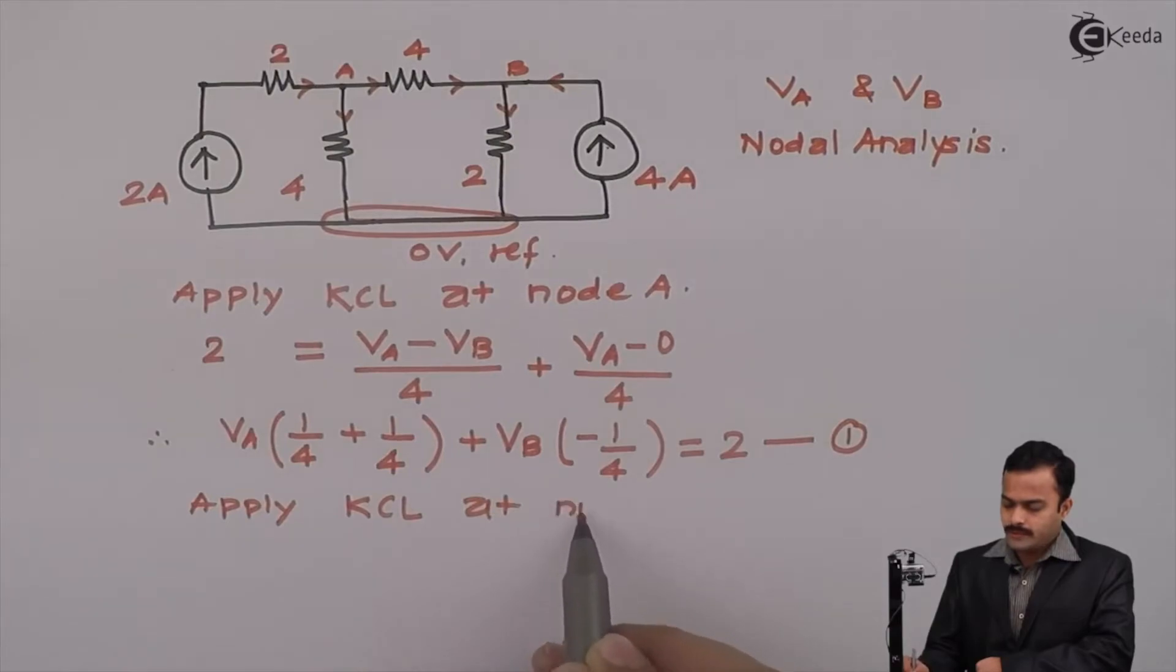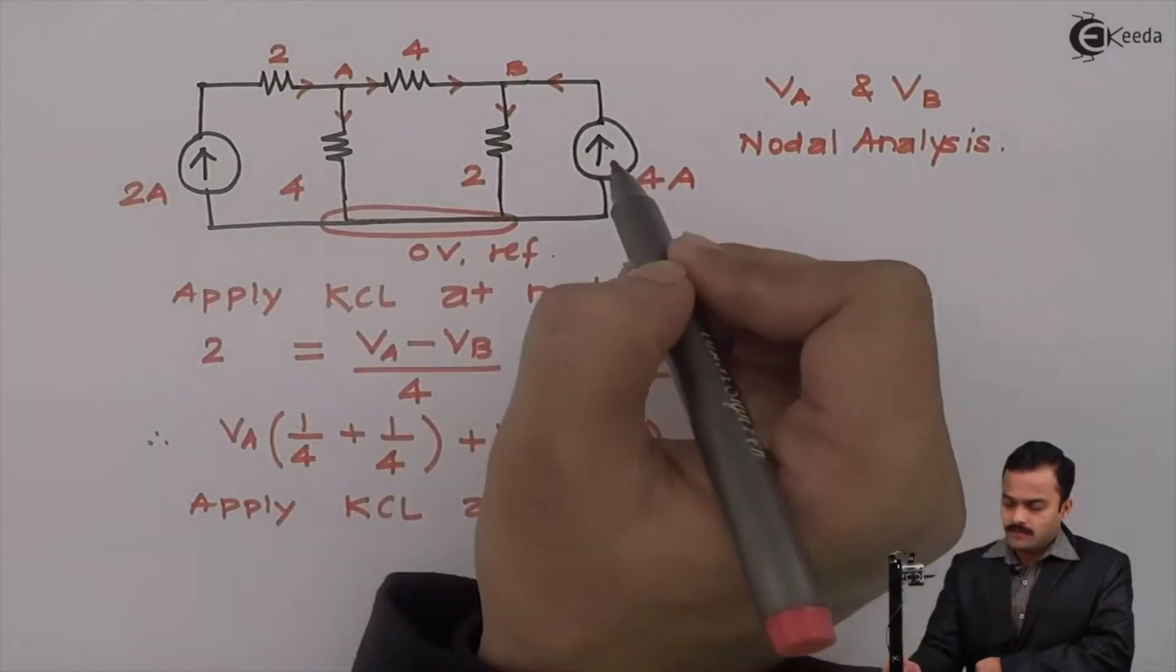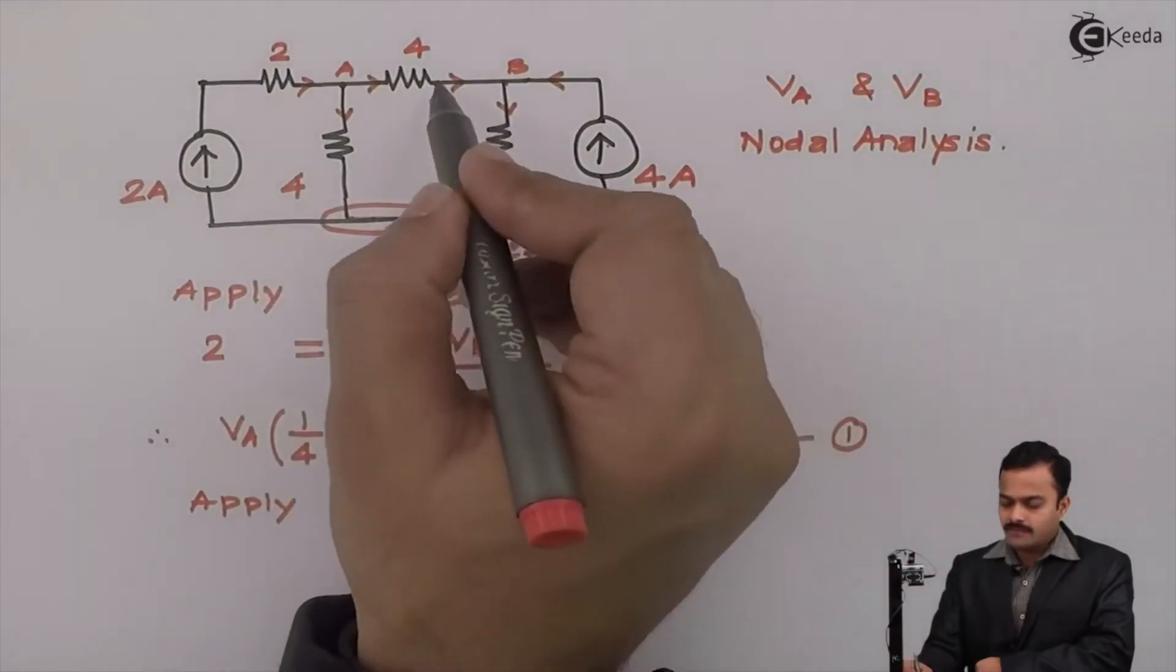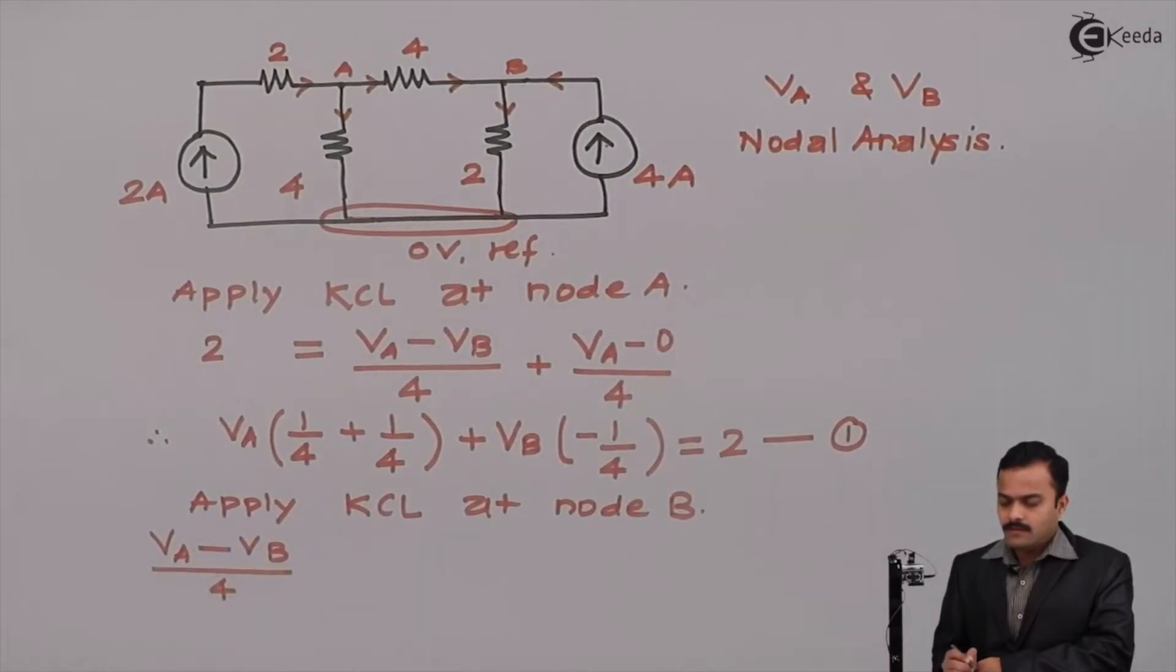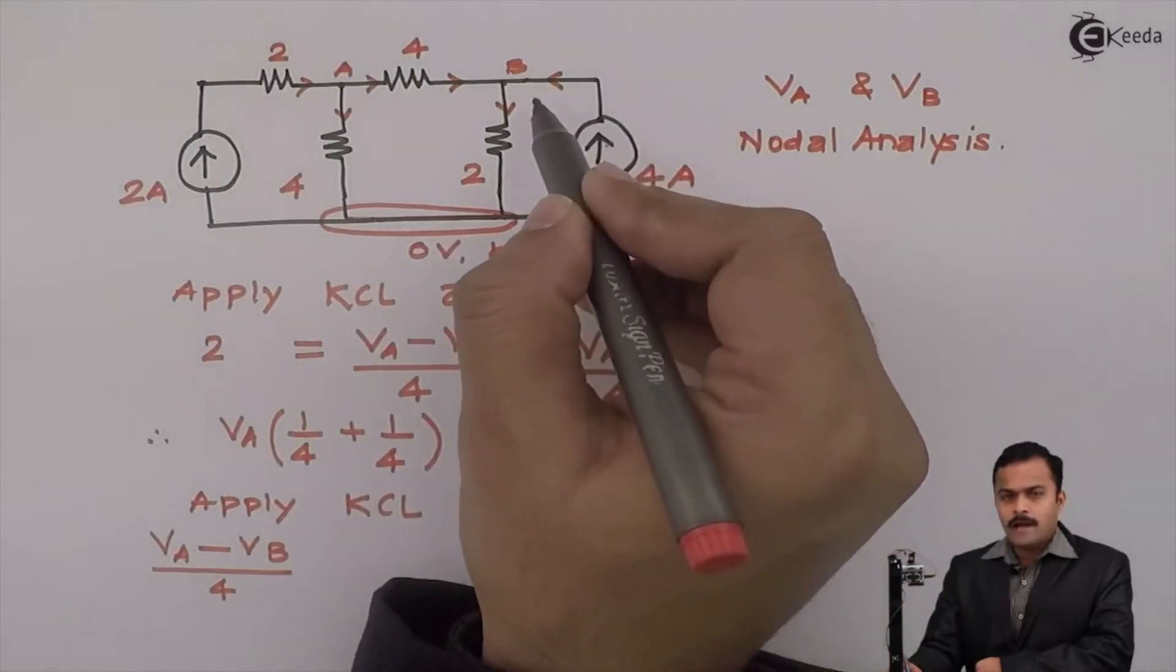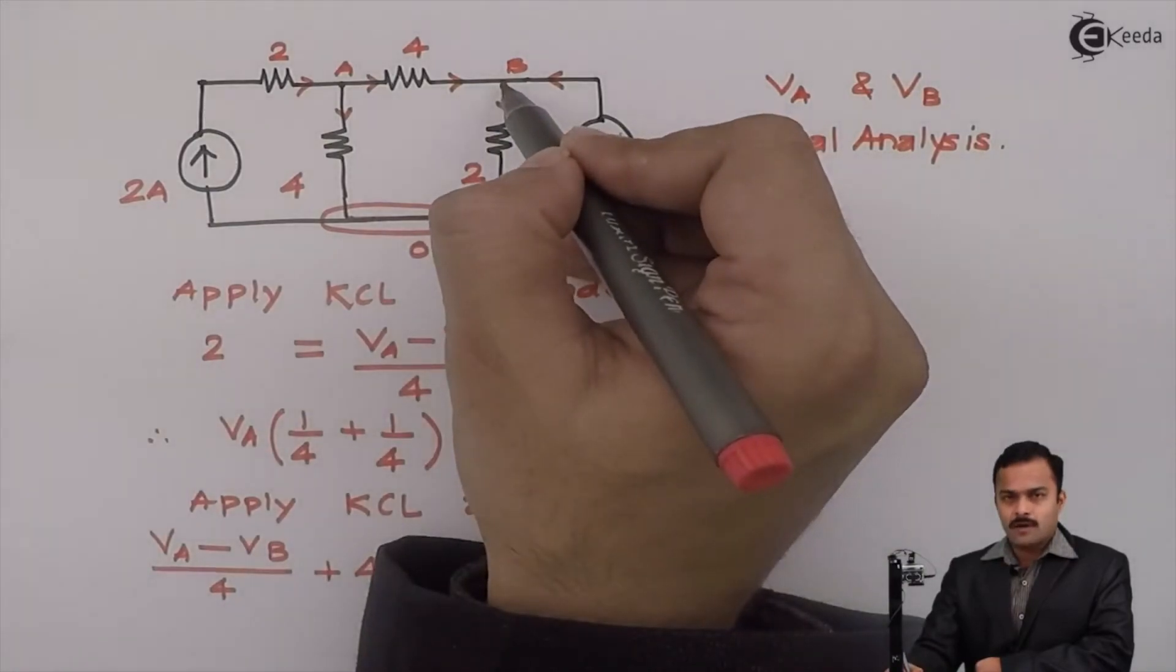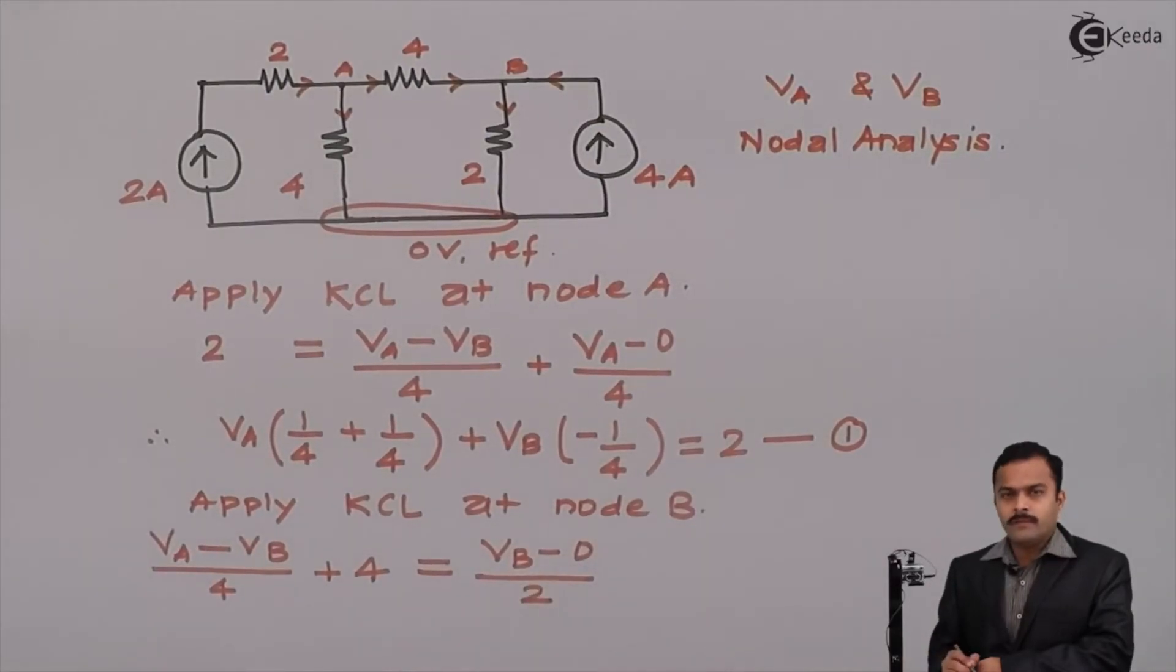At node B I am having 2 incoming currents. One is 4 ampere and another is this current flowing through this 4 ohm. So I will write equation for this current which I have already written. So it will become VA-VB divided by 4. 4 ampere current source is given. So simply it will be plus 4 equal to outgoing current starting from a B node and ending on a reference. So VB minus 0 divided by 2.